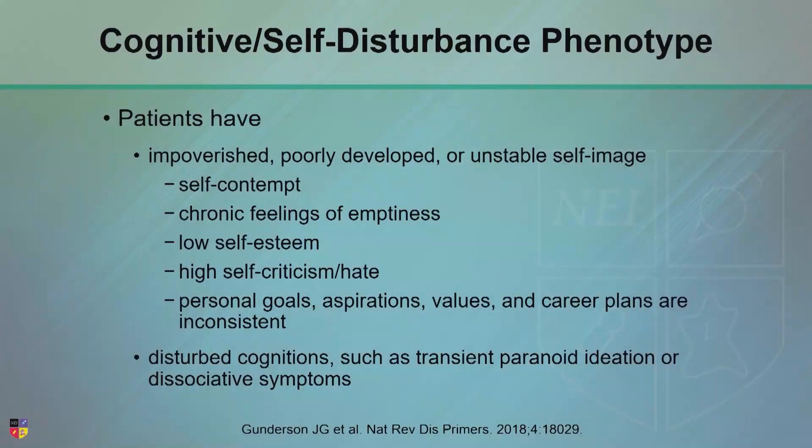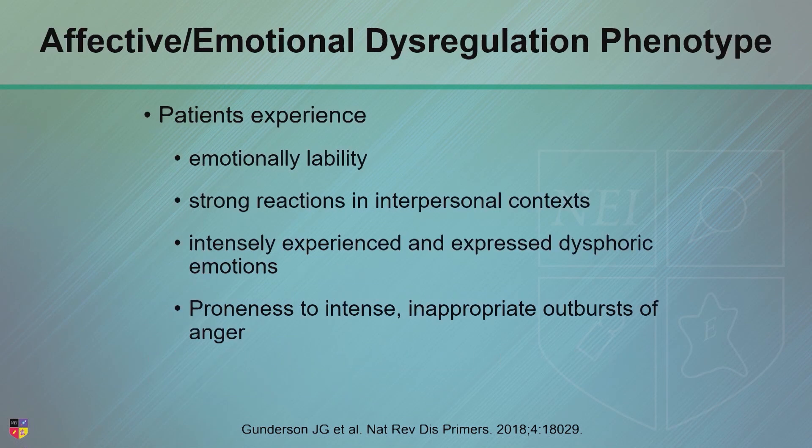There's a cognitive self-disturbance type — who am I, what's my identity? They also have self-contempt, chronic emptiness, self-hatred. These are the folks I lose sleep over. These are the ones that do not only the gestures, but the really severe suicide attempts. This is the group I worry about. But it's a different set of genes and neuroimaging.